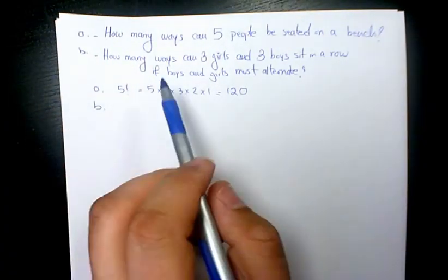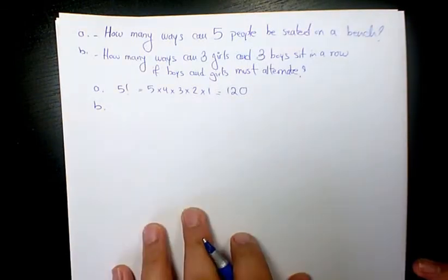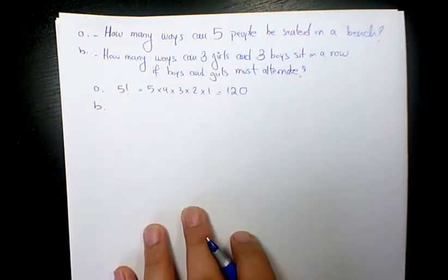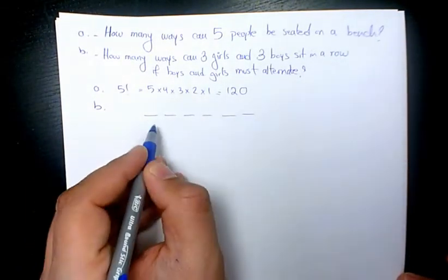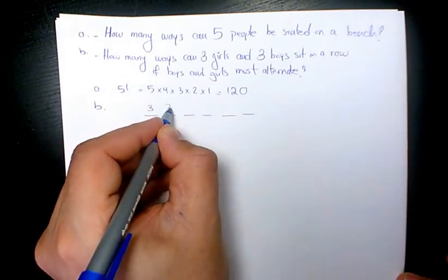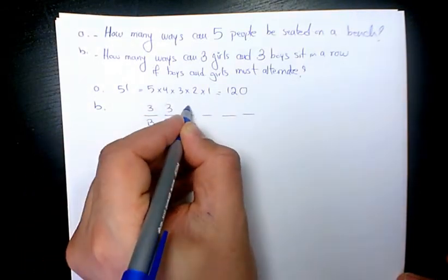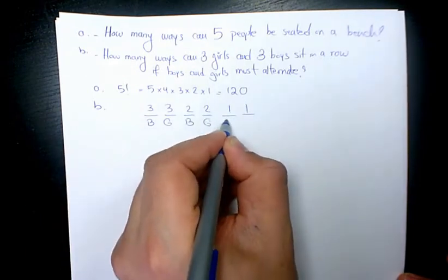Now the second question is gonna be how many ways can three girls and three boys sit in a row if boys and girls must alternate. So here we have six different positions, so we have three boys here and three girls, and then we have two and two and one and one: B G and B G.